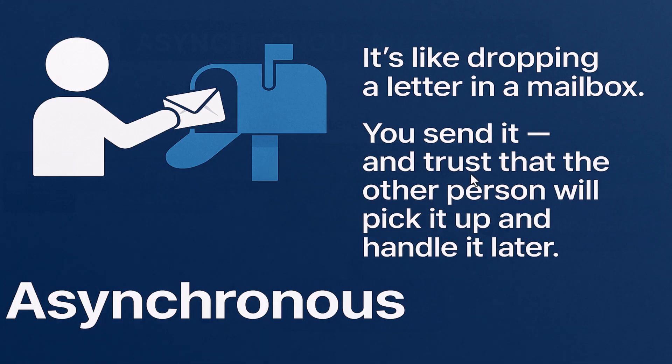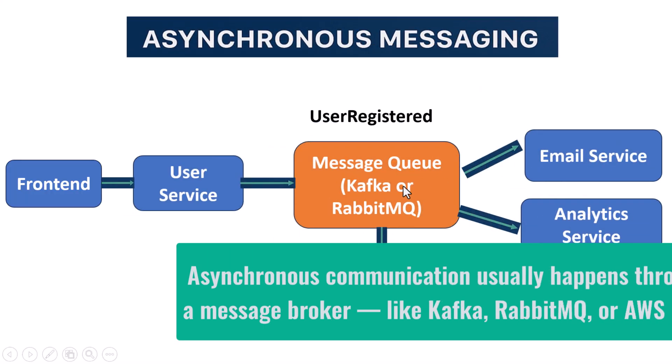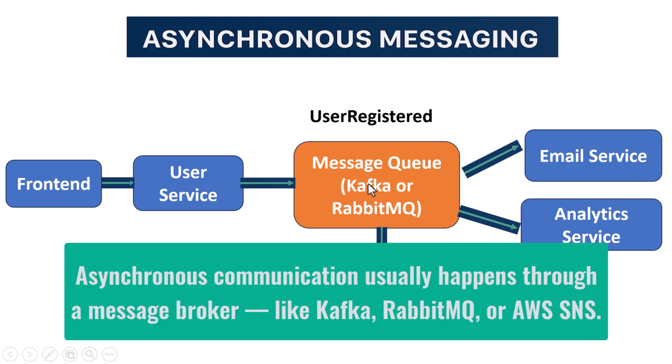Asynchronous communication usually happens through a message broker like Kafka, RabbitMQ, or AWS SNS.